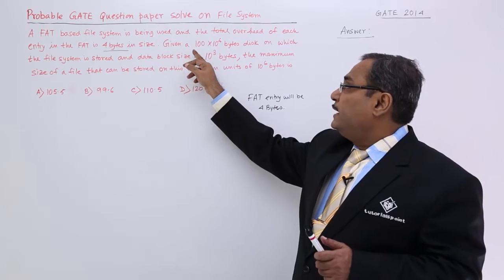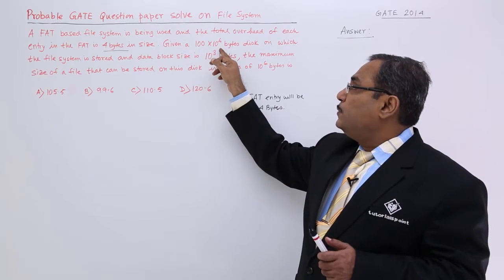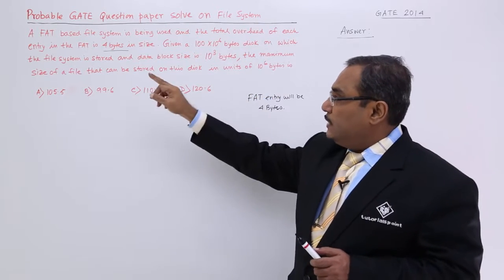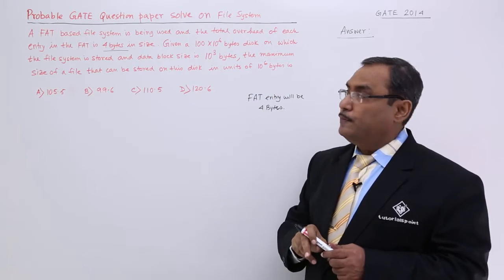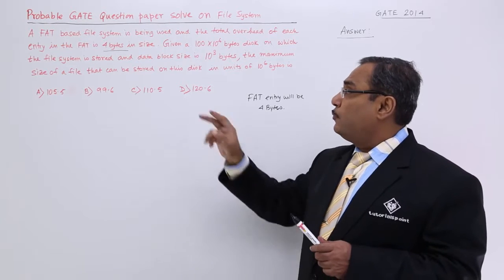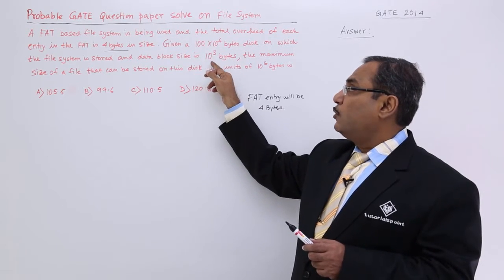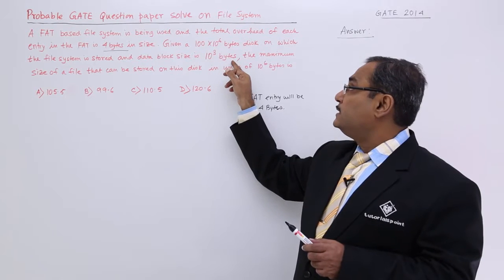Now given a 100 × 10^6 bytes disk space on which the file system is stored and data block size is 10^3 bytes, that is the data block size 10^3 bytes.